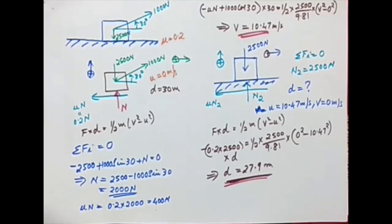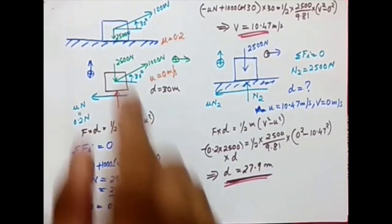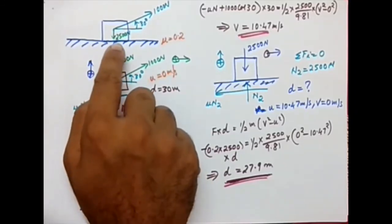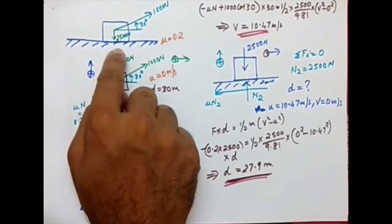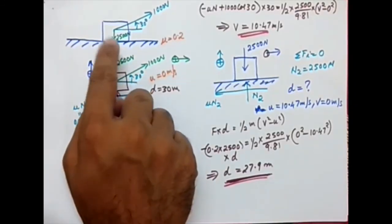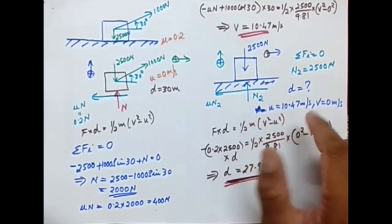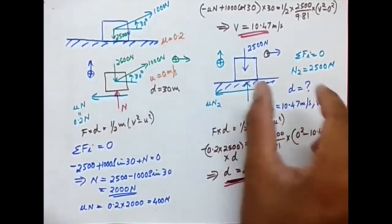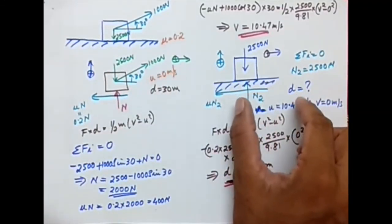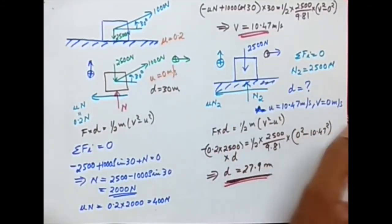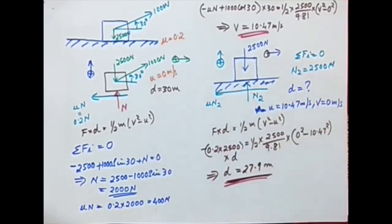This problem demonstrates an application of the work-energy principle under two separate conditions — one where the 1000 Newton force is present and one where it is not. You need to consider both cases separately, draw the free body diagrams for each, and then solve accordingly.